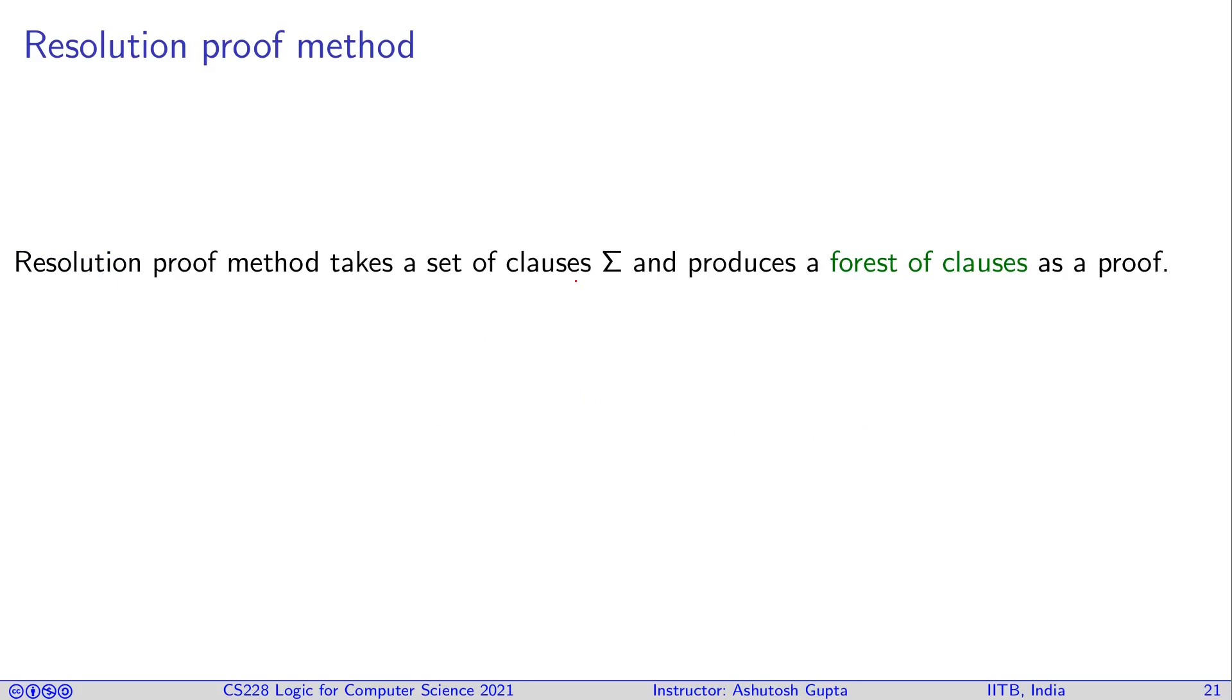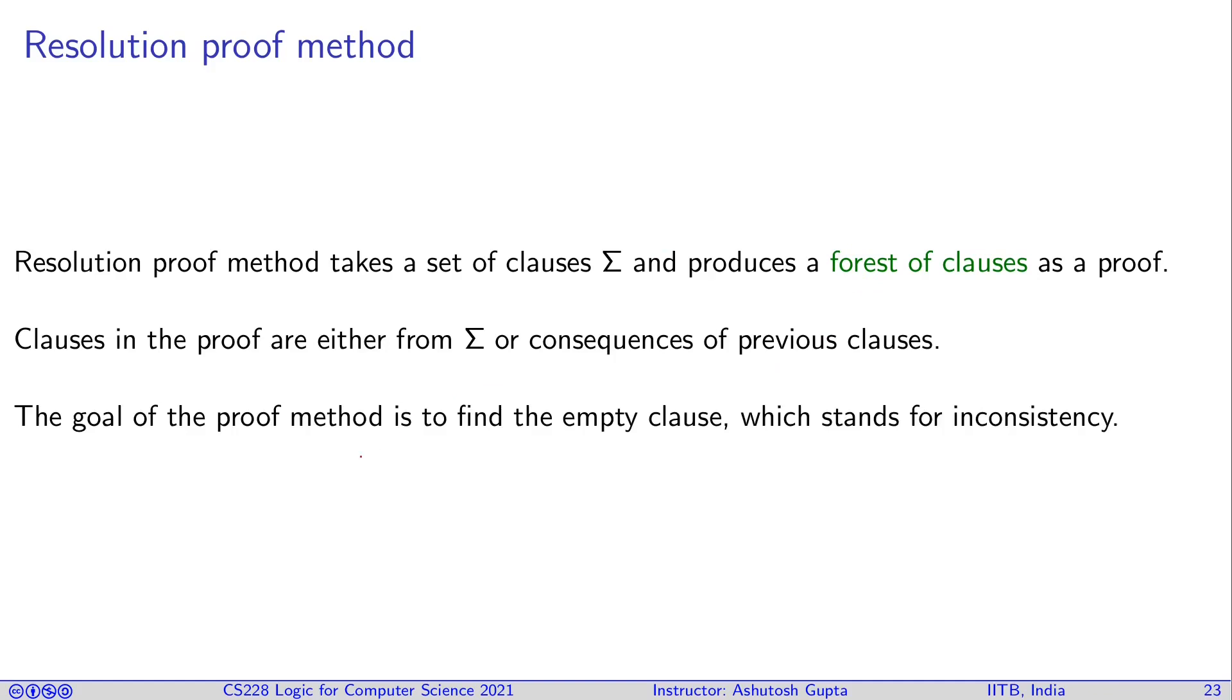Now, how does the resolution proof method work? Resolution proof method takes a set of clauses sigma and produces a forest of clauses as a proof. The clauses in the proof are either from sigma or consequence of previous clauses. A goal of the proof method is to find the empty clause which stands for inconsistency.